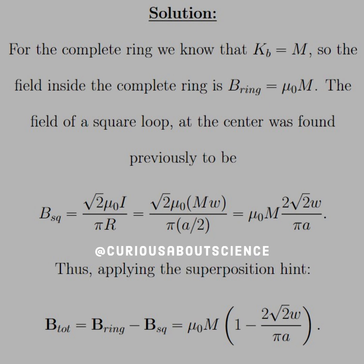Let's hop straight to the solution. All right, so for the complete ring, we know that KB equals M, so that the field inside the ring, or B ring, is equal to mu not M. It's straightforward. We've seen it enough times. The field of the square loop at the center was previously found, I believe, last chapter, and that took a lot of geometry to manipulate into form.